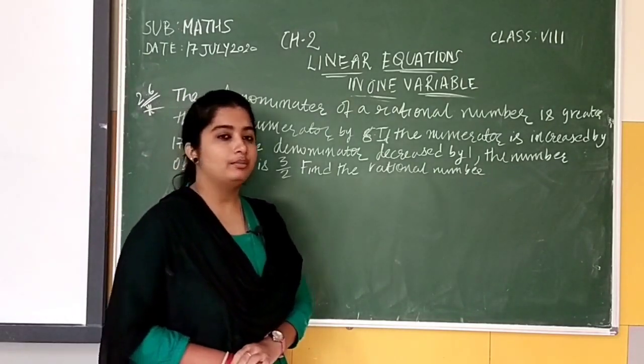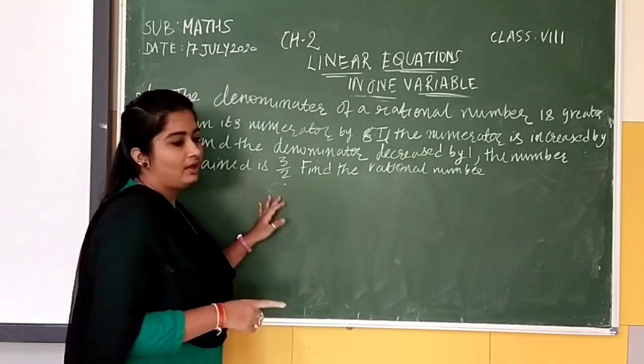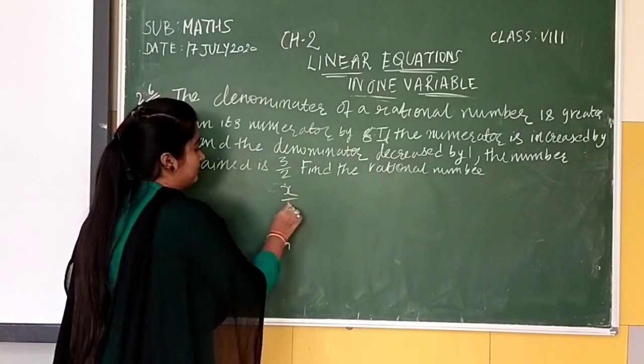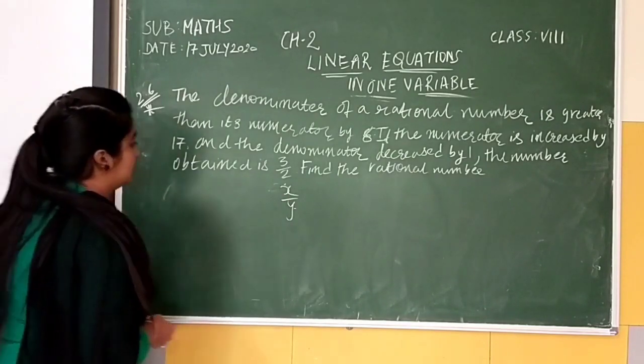We have a rational number here. Rational number kya hota hai hamaara? X upon Y. Means uske division mein bhi koi number hooga hamaara.